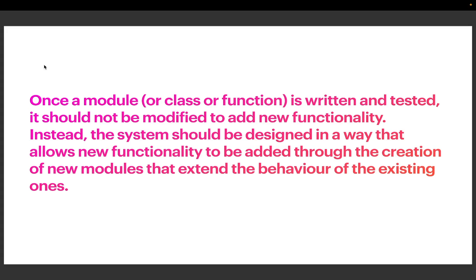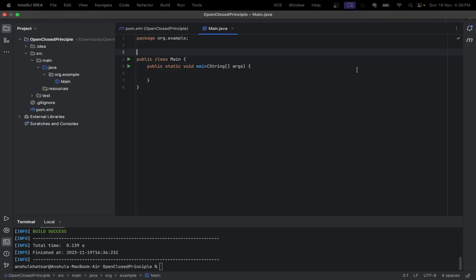Let's try to understand this with the help of an example where we will first violate the Open/Closed Principle by modifying the existing modules or existing code to add new functionality, and then we will refactor the code. Let's head over to IntelliJ and see an example of a Shape class where the principle is violated, and then we will refactor the code to adhere to the Open/Closed Principle.